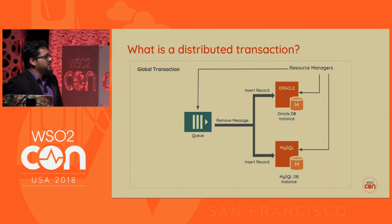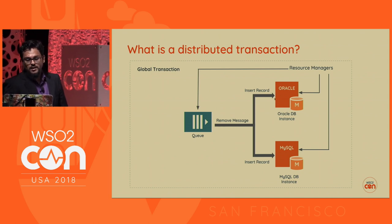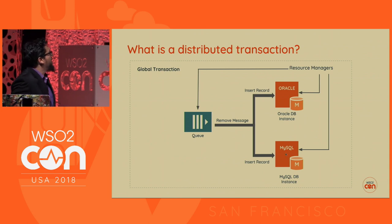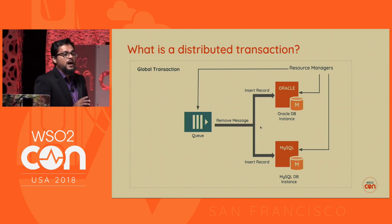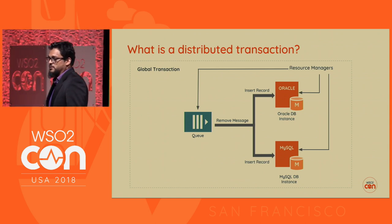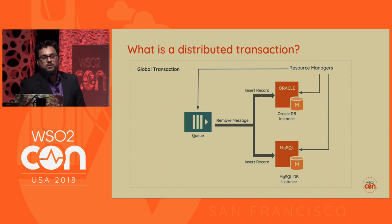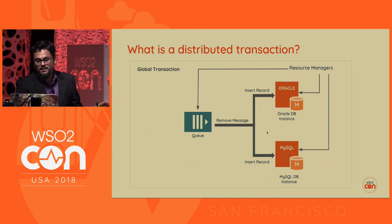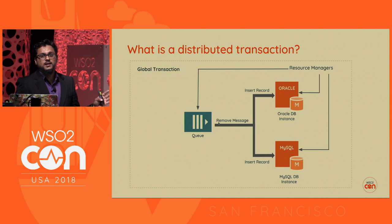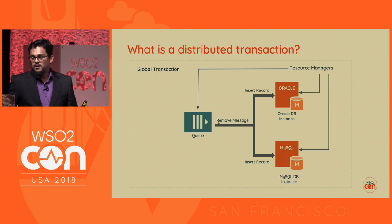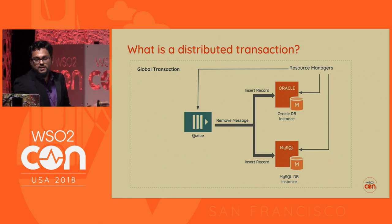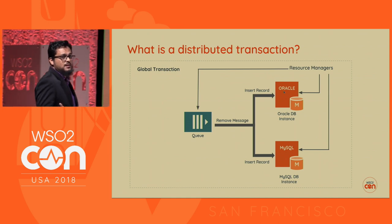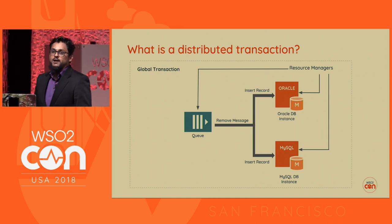In this example, what we are doing is picking up something from a queue and then inserting two records into two different databases. At any point there could be failures — there could be a failure when inserting the first record, or a failure when trying to insert the second record after the first insertion succeeded. If any of these fails, we have to do a rollback of the global transaction and restore the state to what it was before the transaction began.